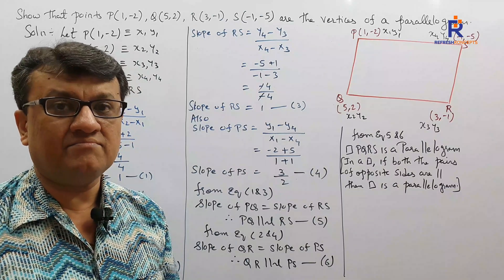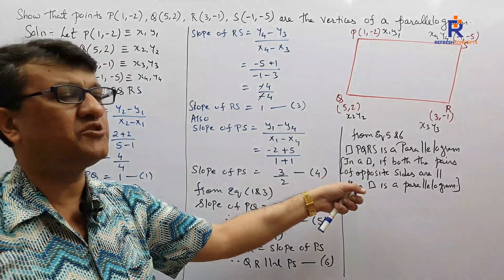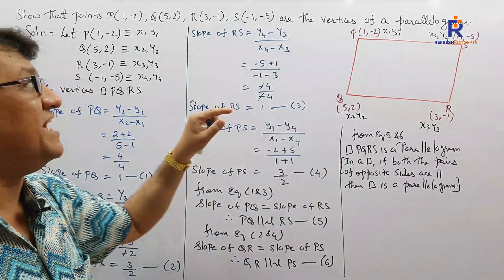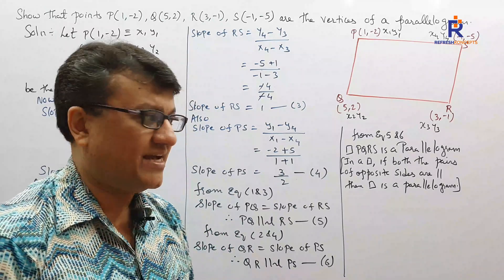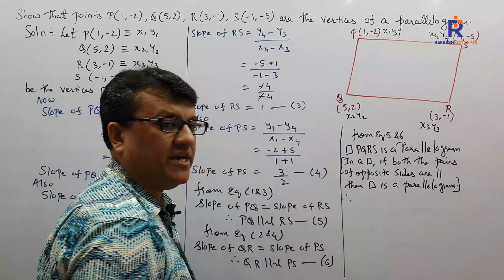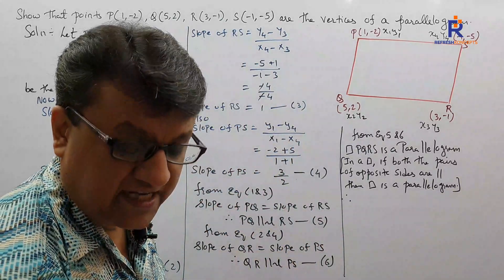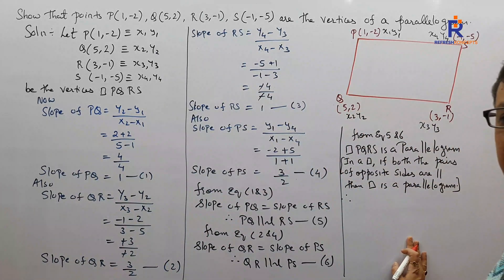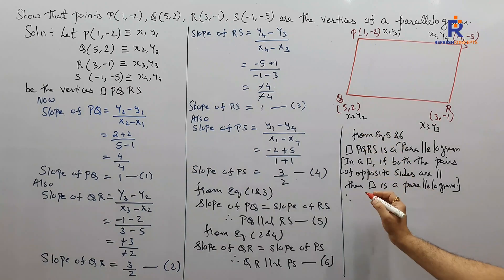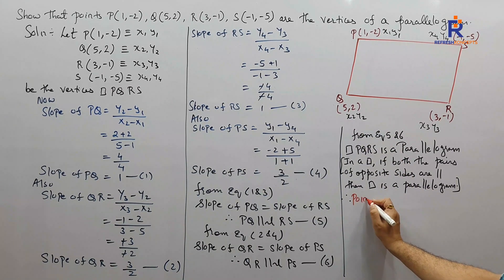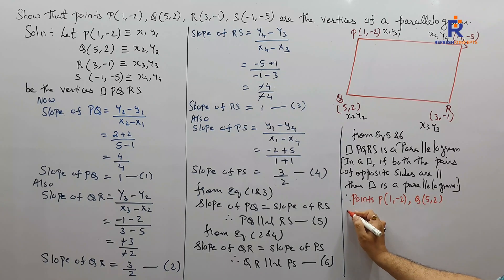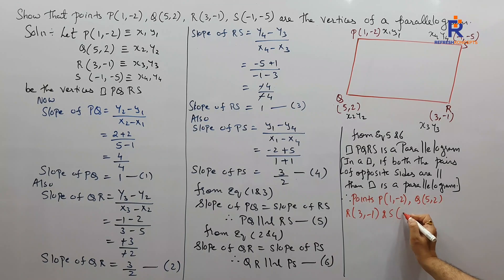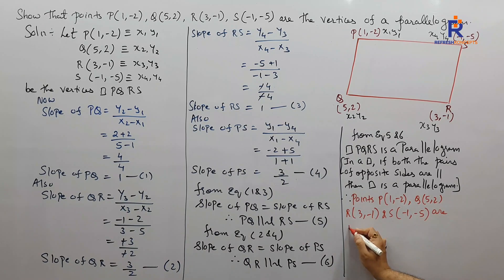Our sum is not done yet. The question never asked to 'prove it is a parallelogram' — it asked to 'show that the points are the vertices of a parallelogram.' So our final answer must be in the question's language. Therefore: points P(1, −2), Q(5, 2), R(3, −1), and S(−1, −5) are the vertices of a parallelogram. Students tend to lose marks by not writing the final answer in the form the question demands.